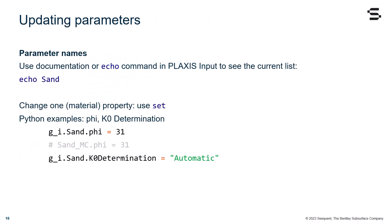To be able to identify the various parameters for a material, you can use our documentation, or the echo command in PLAXIS input. That will give you the current list.